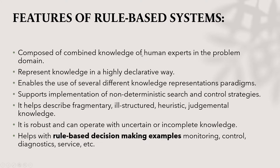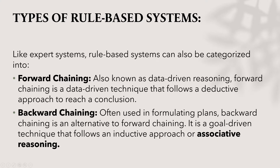The features of rule-based system: it is composed of combined knowledge of human experts as a problem domain. It represents knowledge in a highly declarative way and enables the use of several different knowledge representation paradigms. It supports implementation of non-deterministic search and control strategies. It is robust and can operate with uncertain or incomplete knowledge. It also helps with rule-based decision-making examples such as monitoring, control, diagnostics, service, etc.